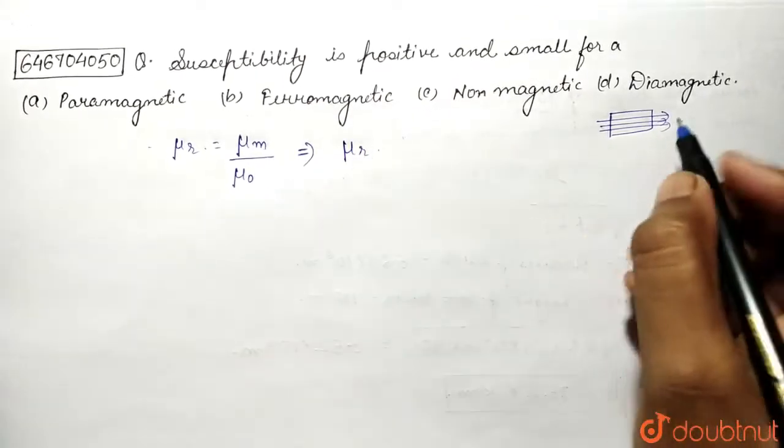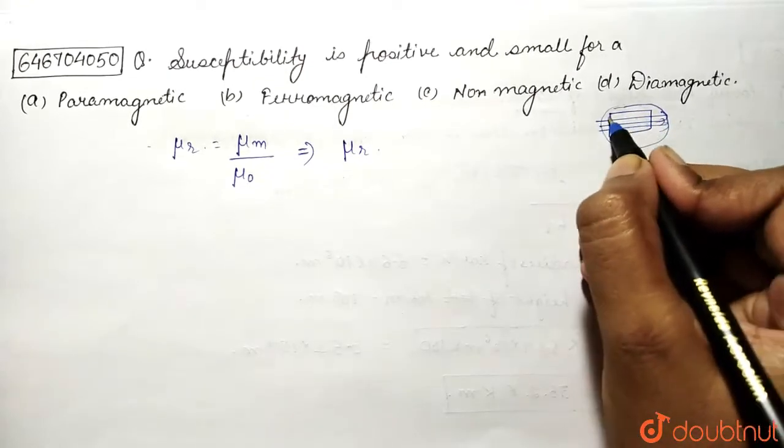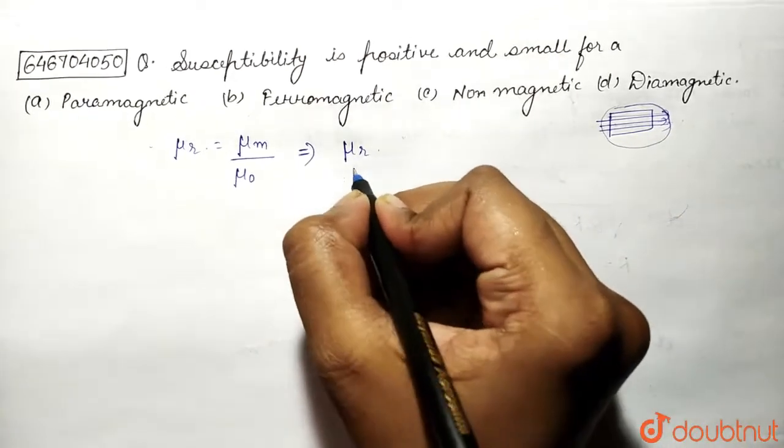it allows, like it does not completely allow but it allows a bit. Okay, and for paramagnetic substance, relative permeability